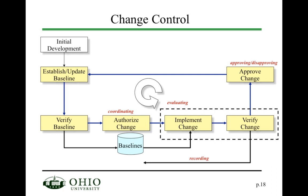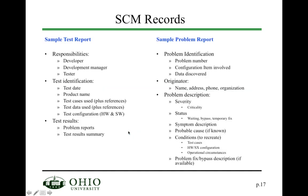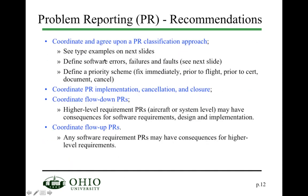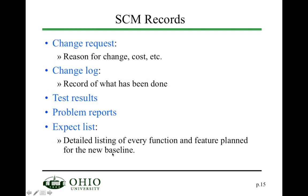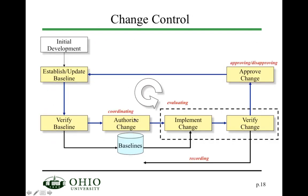Going back to the change control mechanism: starting from the baseline, you verify it, identify problems requiring changes that need to be authorized. You need to perform all the coordination activities discussed, then implement a change and verify it to evaluate that the identified changes are correctly implemented.